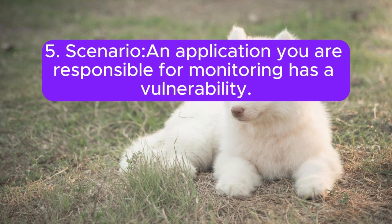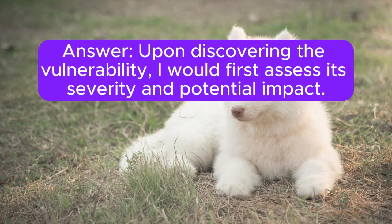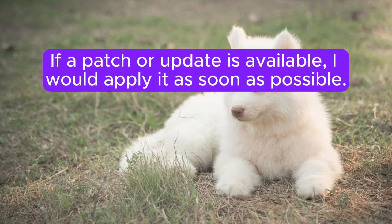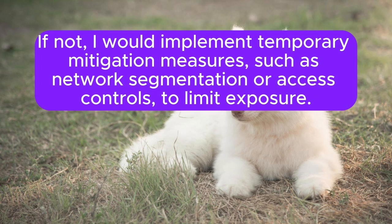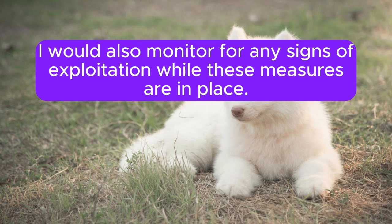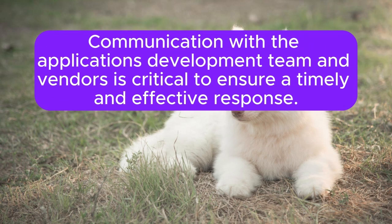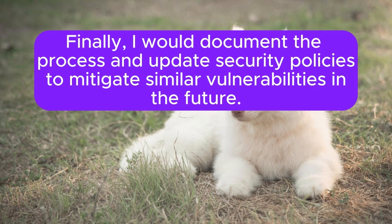Scenario 5: An application you are responsible for monitoring has a vulnerability. How do you handle it? Upon discovering the vulnerability, I would first assess its severity and potential impact. If a patch or update is available, I would apply it as soon as possible. If not, I would implement temporary mitigation measures, such as network segmentation or access controls, to limit exposure. I would also monitor for any signs of exploitation while these measures are in place. Next, I would conduct a risk assessment to understand how the vulnerability could be exploited and what data or systems are at risk. Communication with the application's development team and vendors is critical to ensure a timely and effective response. Finally, I would document the process and update security policies to mitigate similar vulnerabilities in the future.